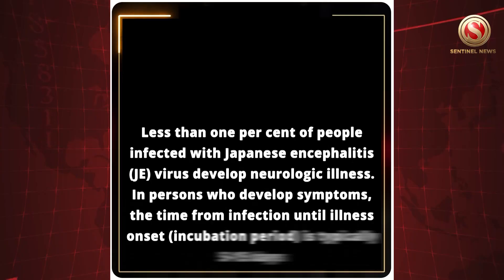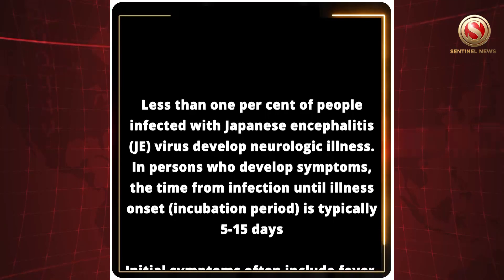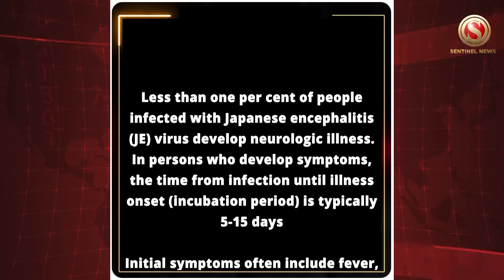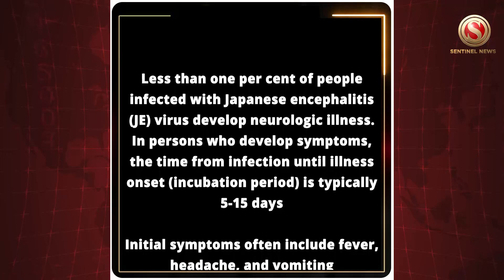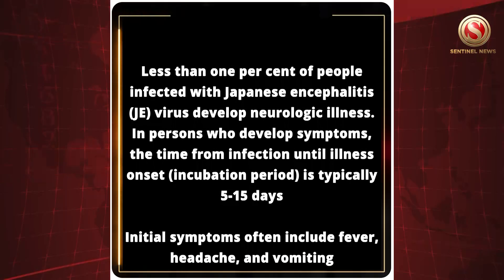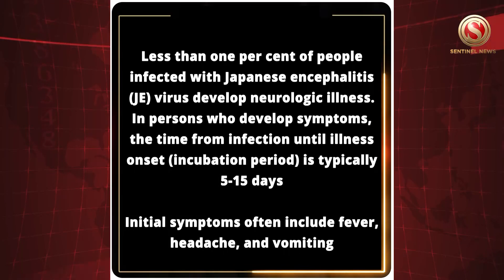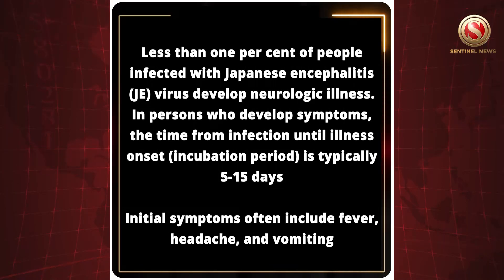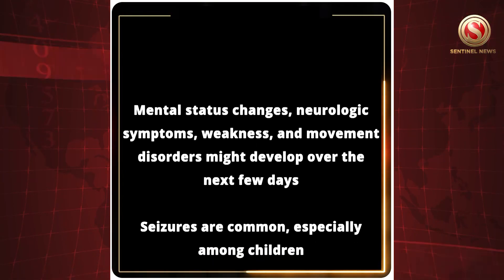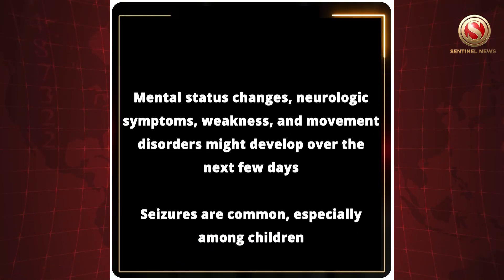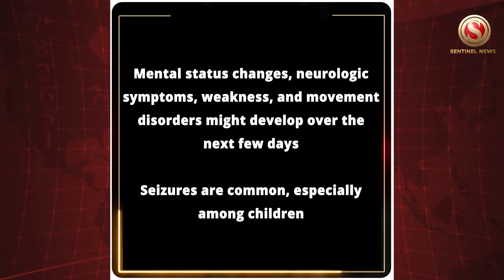Less than 1% of people infected with Japanese Encephalitis virus develop neurological illness. In persons who develop symptoms, the incubation period is typically 5 to 15 days. Initial symptoms often include fever, headache and vomiting. Mental status changes, neurologic symptoms, weakness and movement disorders might develop over the next few days. Seizures are common, especially among children.